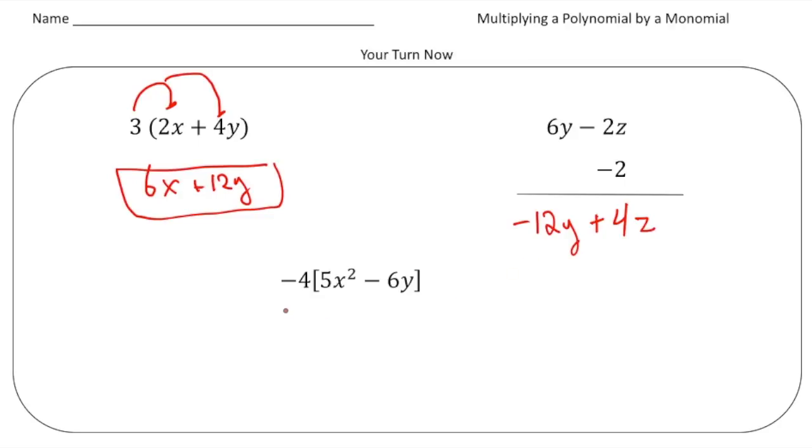And then last but not least, we have negative 4 times parentheses 5x squared minus 6y. So again, I'm going to distribute the negative 4 to both parts. So negative 4 times 5x squared is negative 20x squared. And then negative 4 times negative 6y. Well, a negative times a negative is a positive. So it would be plus 24y.